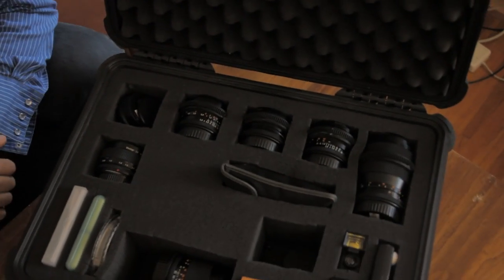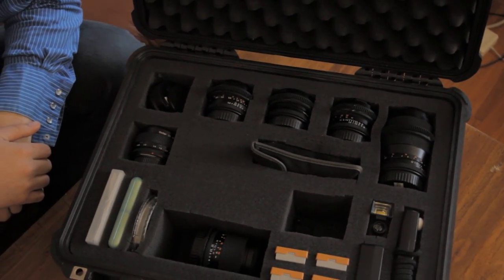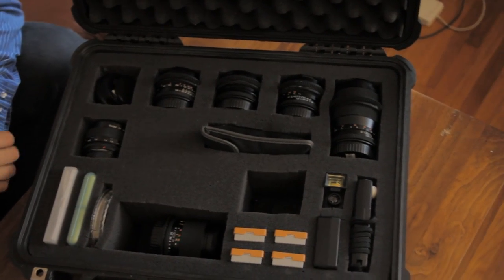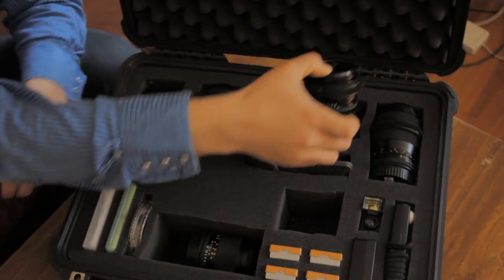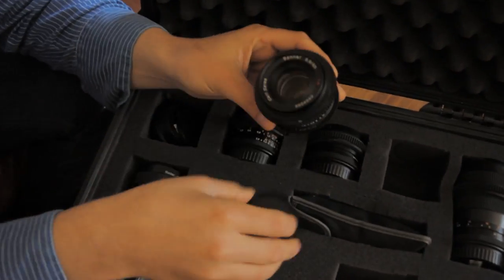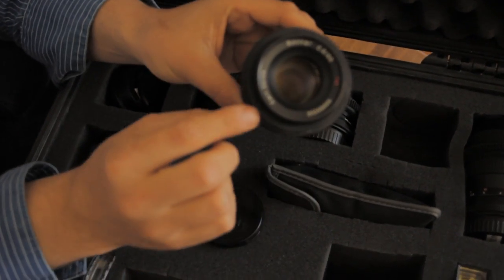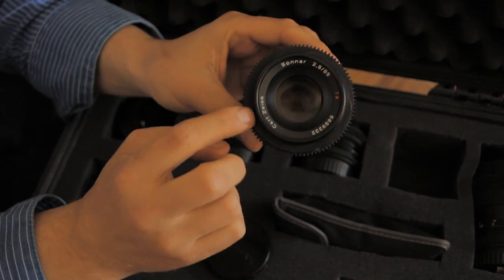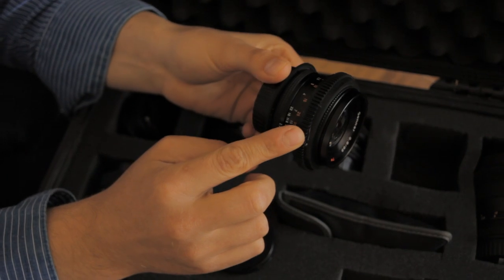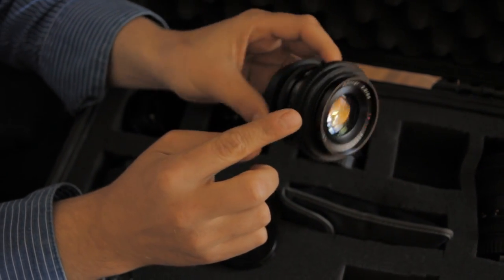So the lenses I use right now are the Contax Carl Zeiss lenses. Very good glass. Here's an example of one of the follow focus gears. It consists of a little rubberized ring and then your .8 pitch focus gears on the outside.